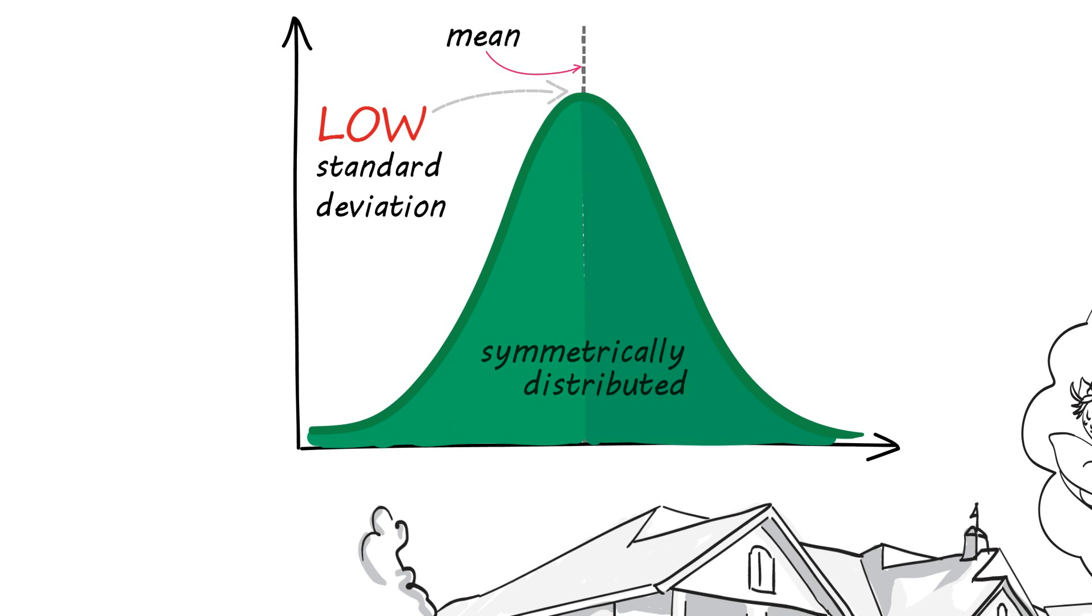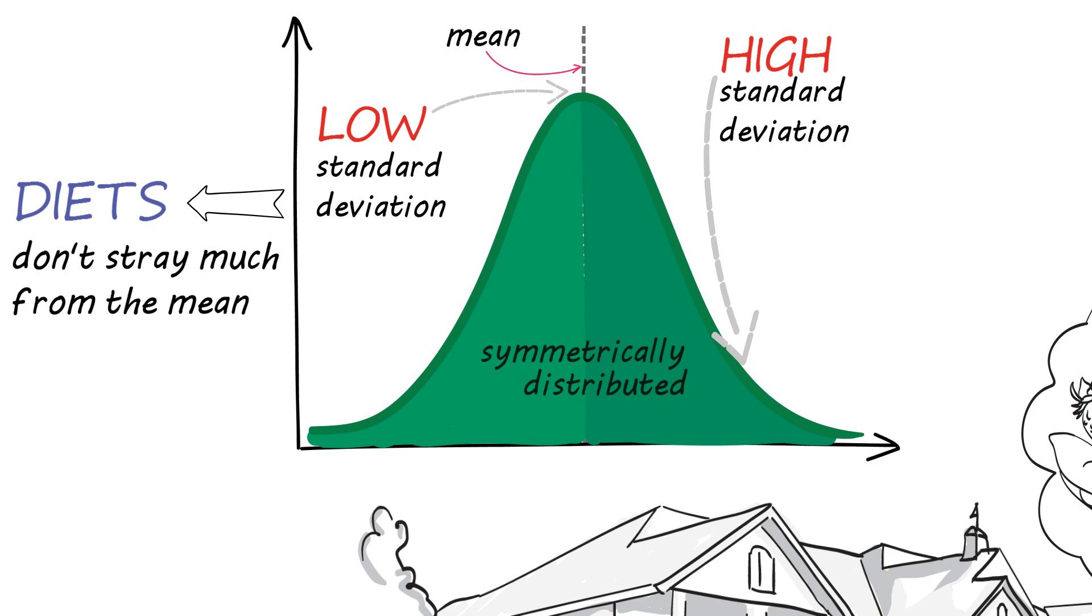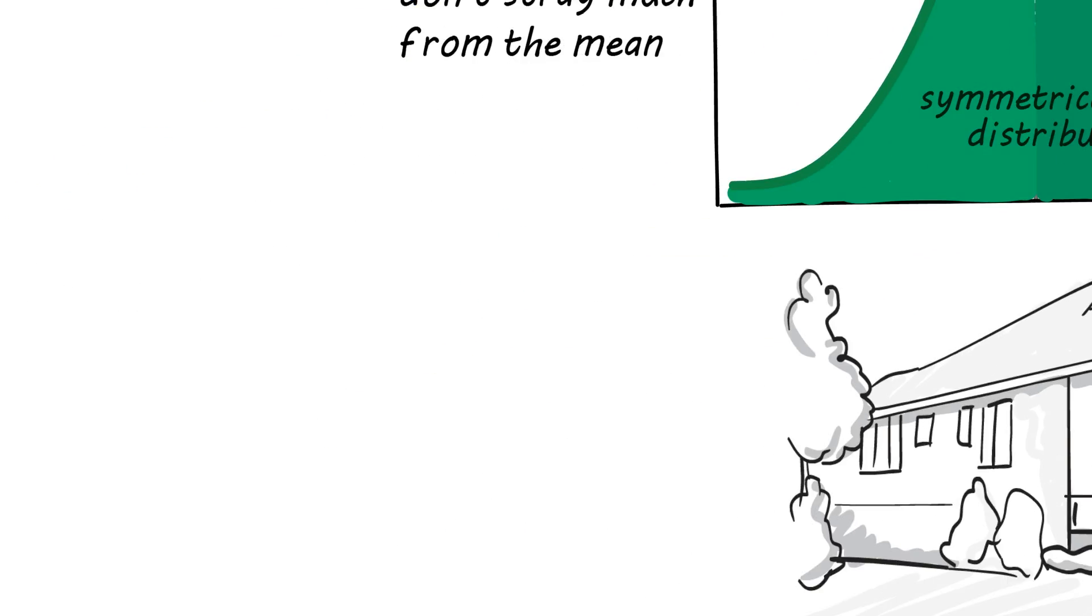A low standard deviation would mean that diets in this data set don't stray much from the mean. A high standard deviation would mean the opposite. Diets have a wide spread from the average. Why is this useful?